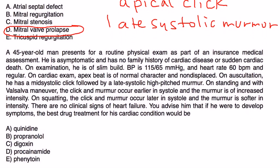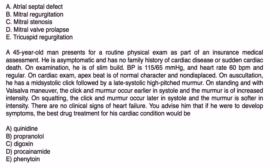And then the last one. A 45-year-old man presents for a routine physical exam as part of an insurance medical assessment. He is asymptomatic, has no family history of cardiac disease or sudden cardiac death. On exam, he is of slim build. Blood pressure is 115 over 65, heart rate 60, and regular. Cardiac exam, apex beat is of normal character and non-displaced. On auscultation, he has a mid-systolic click followed by a late systolic high-pitched murmur. On standing and with Valsalva maneuver, the click and murmur occur earlier in systole, and the murmur is of increased intensity. On squatting, the click and the murmur occur later in systole, and the murmur is softer in intensity. There are no clinical signs of heart failure. You advise him that if he were to develop symptoms, the best drug treatment for this cardiac condition would be.